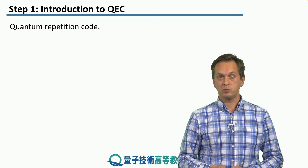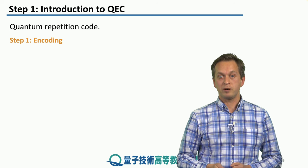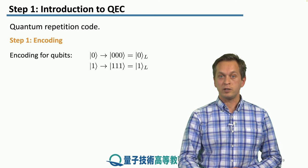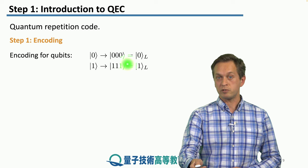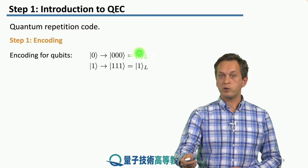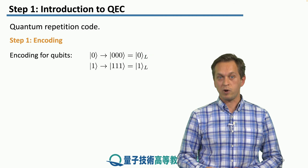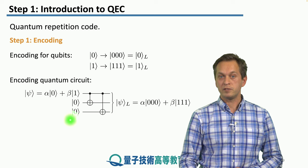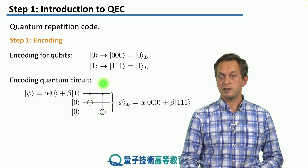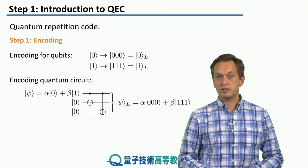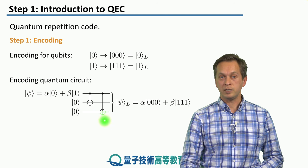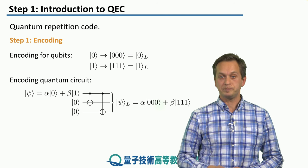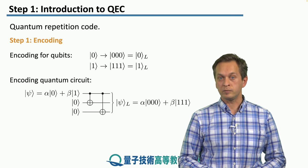How does quantum repetition code work? The first step is encoding. We take |0⟩ and |1⟩ and encode them as |000⟩ and |111⟩ respectively, which we call logical qubit |0̄⟩ and logical qubit |1̄⟩. A quantum circuit achieves this encoding using three physical qubits: the first is initialized in the state we want to communicate — some arbitrary superposition α|0⟩+β|1⟩ — and the other two are initialized in |0⟩. By applying two CNOT gates controlled on the first qubit, we obtain our encoded logical qubit |ψ_L⟩.